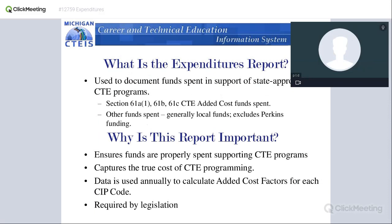The system has a lot of important functions. It tracks all the money spent from different funding sources: 61A, 61B, 61C specifically, as well as other funds such as local funds received and state aid funds. It does not include federal Perkins funds. This is very important because it ensures that the funds are being properly spent, but it also captures the true cost of CTE programming.